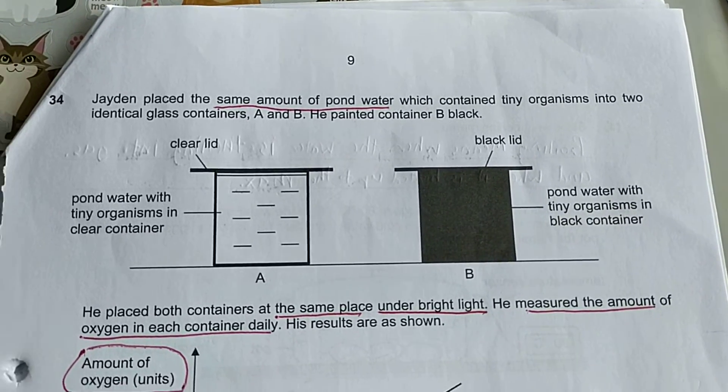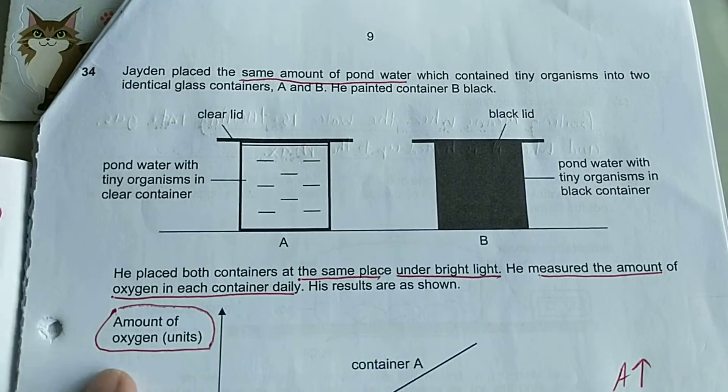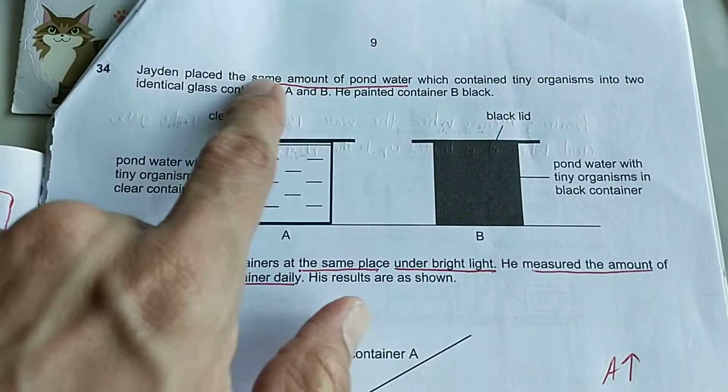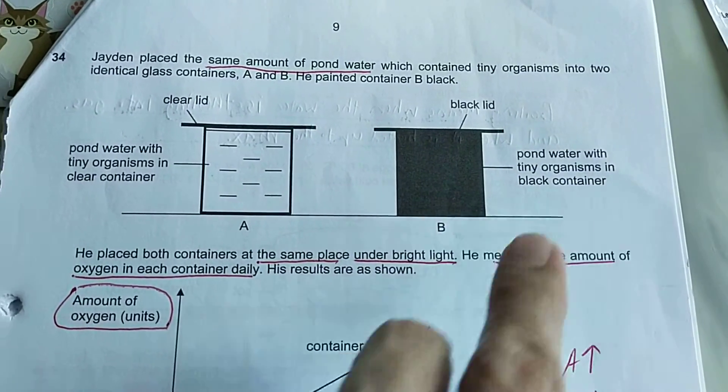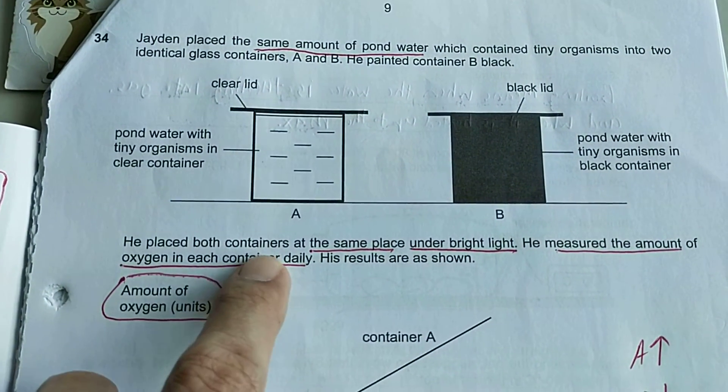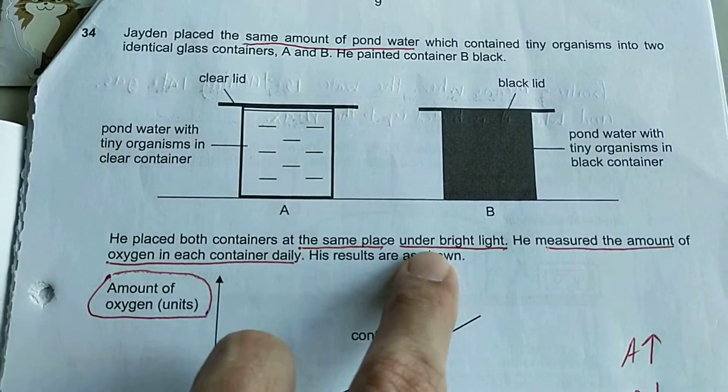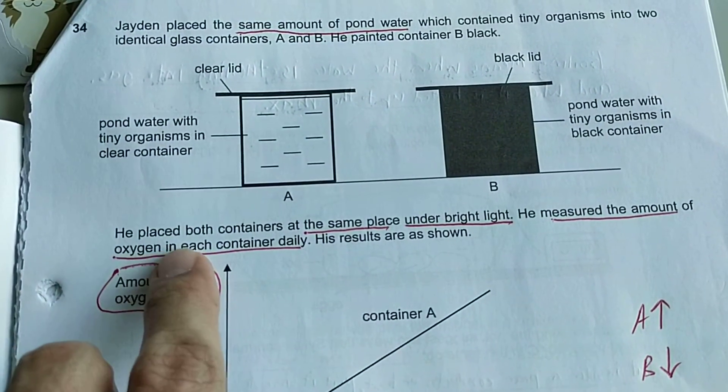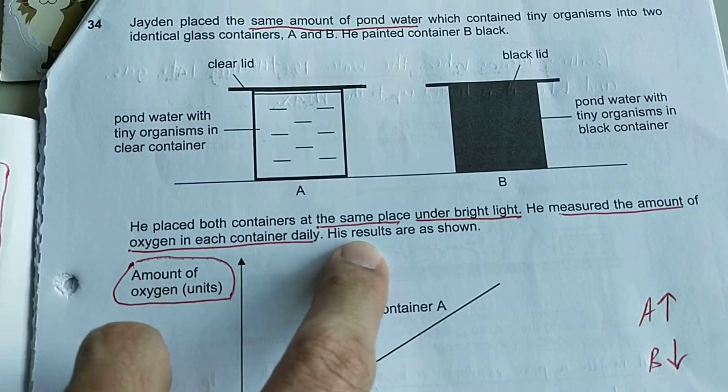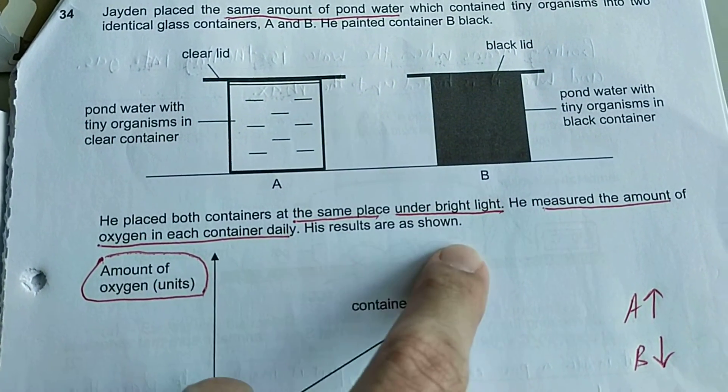He painted container B black. He placed both containers at the same place under bright light. He measured the amount of oxygen in each container daily. His results are as shown.